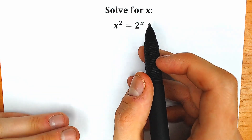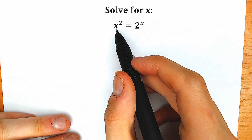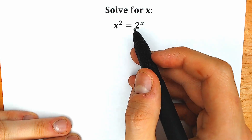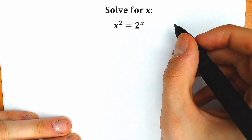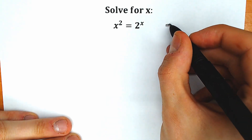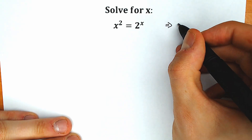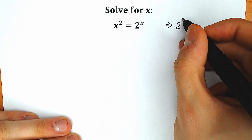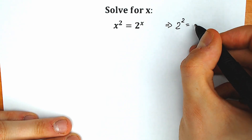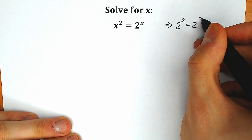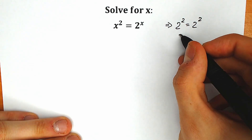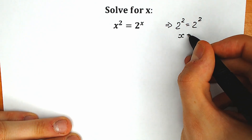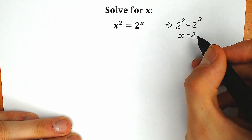A lot of students might be saying, okay, x squared equals 2 to the power x, maybe x equals 2, because then we have 2 squared equals 2 squared. Yeah, x is equal to 2 and that's it. A lot of students solve this question like that.